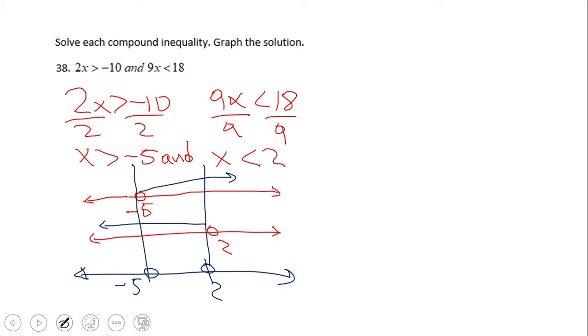And if you notice, the solution set - the common solution set for these two inequalities - is represented by the numbers between negative five and two. So that can be written also in another way in an inequality form.